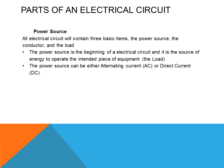Power source can be either AC or DC. The power source is always available — sometimes we call that potential energy, because it's there but not being used or consuming energy. All electrical circuits contain three basic items: the power source, the conductor, and the load. The power source is the beginning of the electrical circuit and is the source of energy to operate the intended piece of equipment. The power source can be either alternating current or DC current.